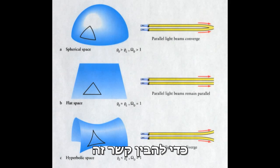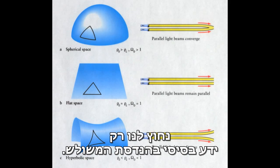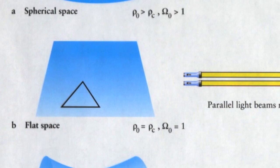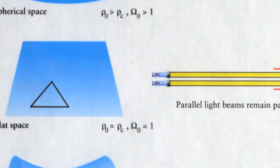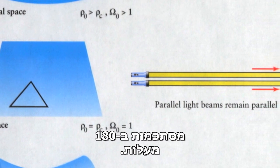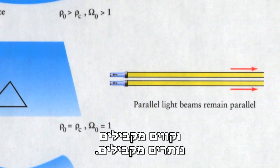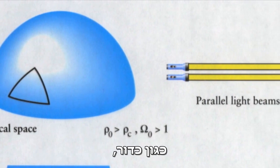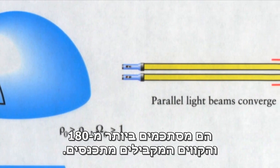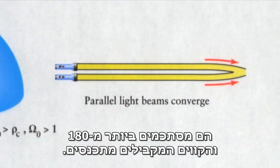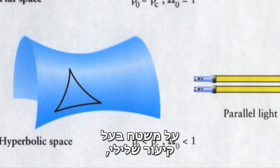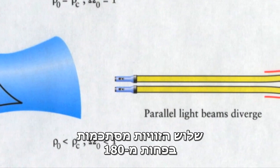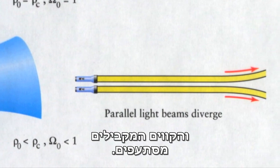To understand this relationship, all we need is basic geometry of triangles. On a flat surface, all angles in a triangle add up to 180 degrees, and parallel lines remain parallel. On a positively curved surface, like a sphere, they add up to something greater than 180, and parallel lines converge. A surface with negative curvature, such as a saddle, the three angles add up to less than 180 degrees, and parallel lines diverge.